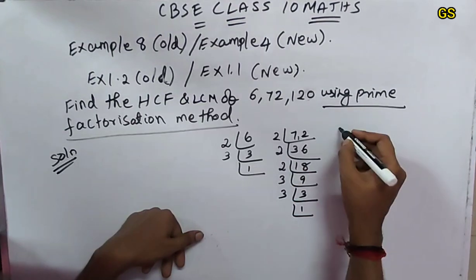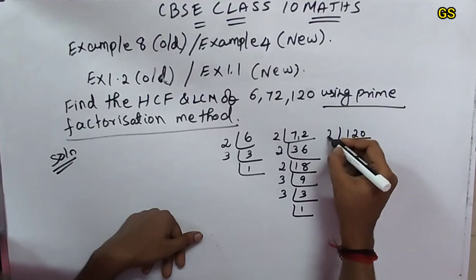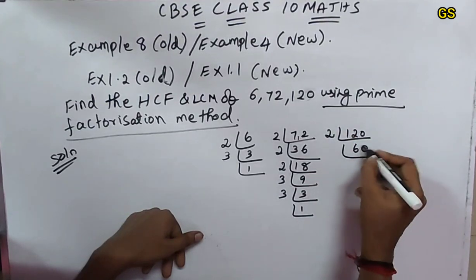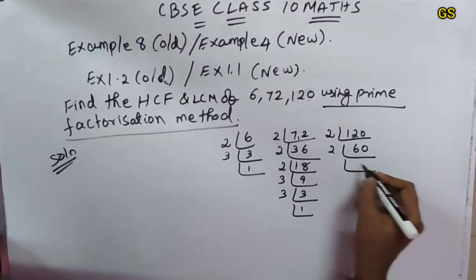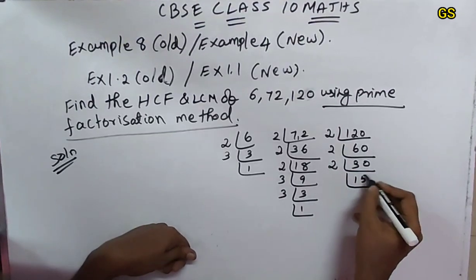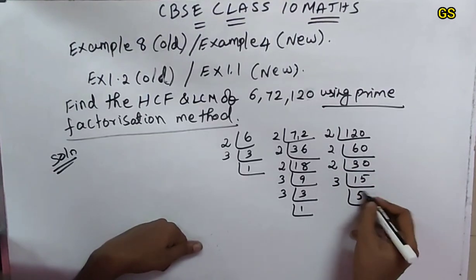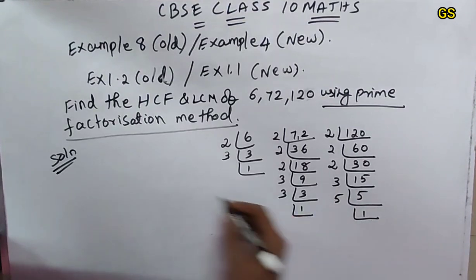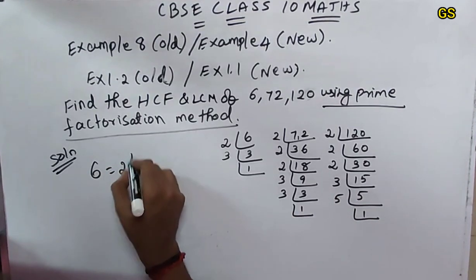Next 120 in the 2 table - 2 times 12 is 60, so 60 times. Next 2 table 30 times, 2 table 15 times, 3 table 5 times, 5 table 1 time.